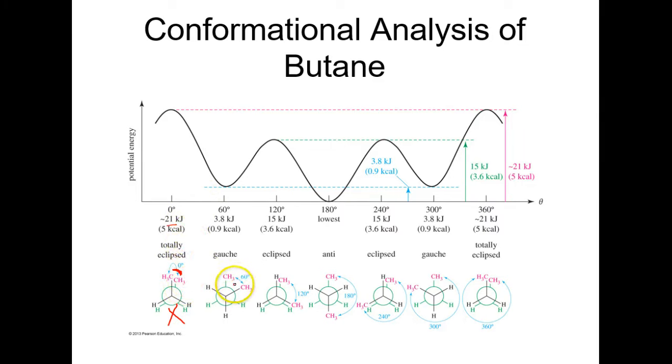Then you have a gauche interaction. You see it comes down in energy. This refers to this. Then you go back up to eclipsing. See how it goes back up in energy. Then finally, you get the anti-conformation. If you notice, the gauche and the anti aren't that far away from each other energy-wise.